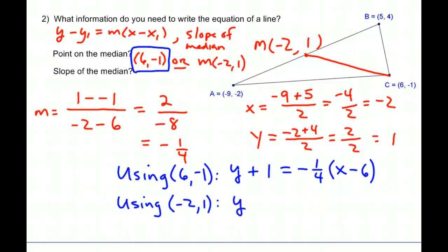You could have gone Y minus, and now using this point right here, Y minus 1 is equal to negative 1 fourth X minus negative 2. So minus negative 2 will end up looking like this.